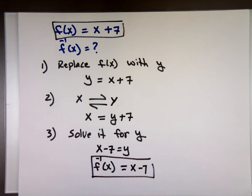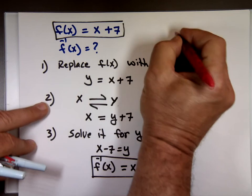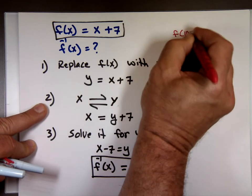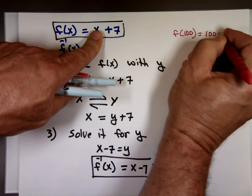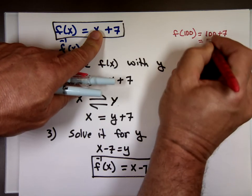100. Okay. Let's see if we're right. What's f of 100? Plug it in. 100 plus 7 which is what? 107.